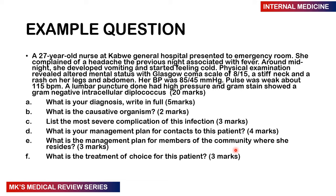Understand what the examiner wants because questions tend to build upon each other. For example, if you give a non-infectious diagnosis for part A and then part B asks for a causative organism, you'll be confused and thrown off. Make sure you gauge the marks allocated — if it's five marks, your diagnosis must be longer than you expect. If it's two marks, there's no need to overthink it.